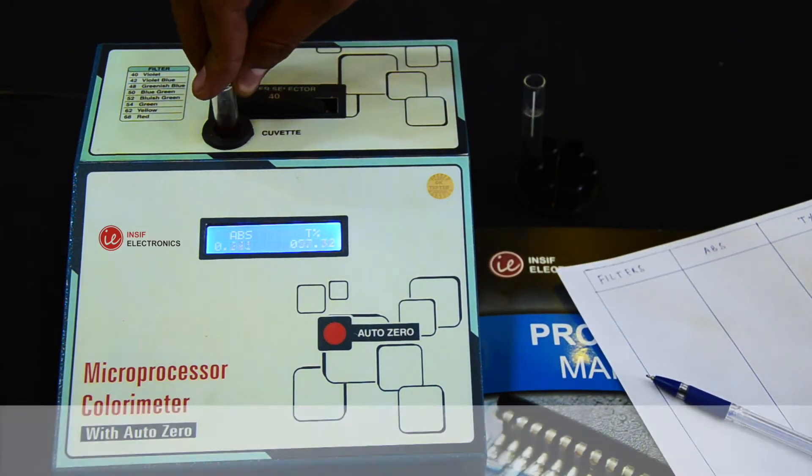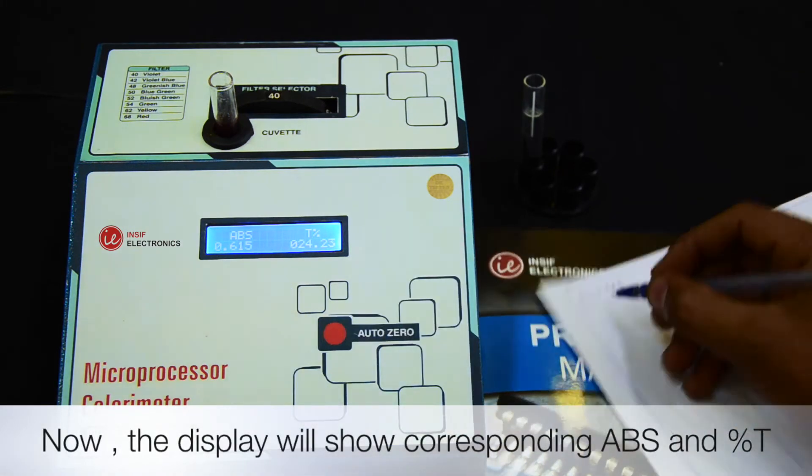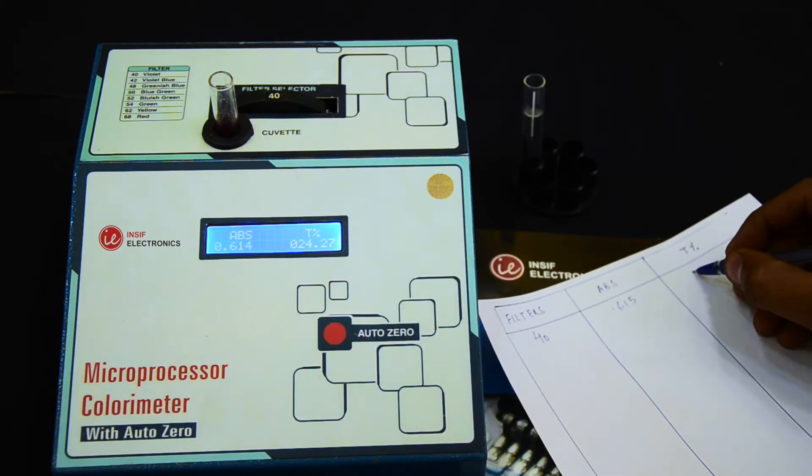We are taking cobalt chloride as a sample. Now the display will show the corresponding absorbance reading. Note it down.